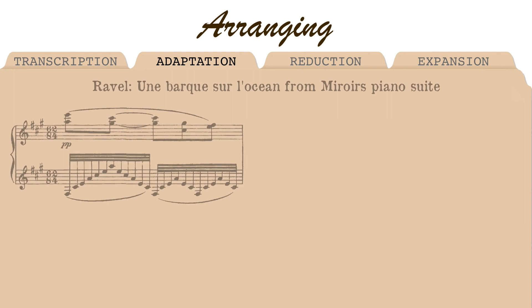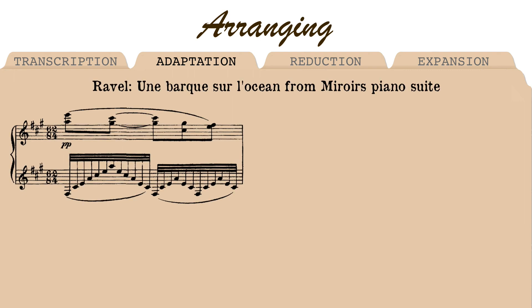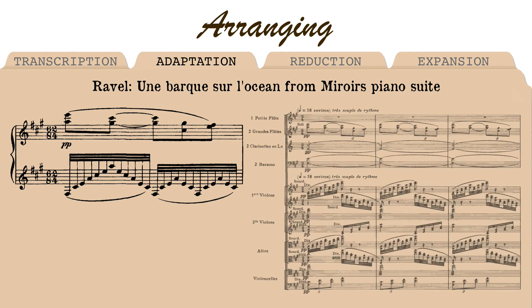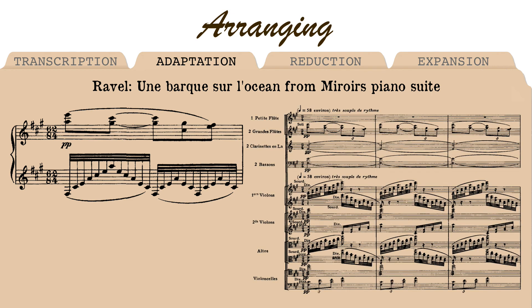Adaptation is a much freer approach, which can be anything from a transcription that adds textural elements all the way to a reinterpretation that bears little resemblance to the original. In a sense, most first-quality orchestral transcriptions — like those of Ravel from his own piano works — are adaptations, as many musical features need to be reworked in order to sound orchestral. Without such careful handling, a note-for-note transcription may well sound like a clumsily orchestrated piano.